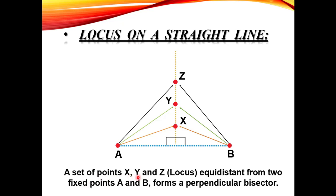A Set of Points X, Y & Z — यानि Locus — Equal Distance from Two Fixed Points A & B — Forms a Perpendicular Bisector। Perpendicular ऐसी Line को कहते हैं जो किसी दूसरी Line के साथ 90 Degree का Angle बनाती हो। यह Orange वाली Vertical Line Blue Line के साथ दोनों sides पर 90 Degree का Angle बना रही है — यह Perpendicular हो गया।